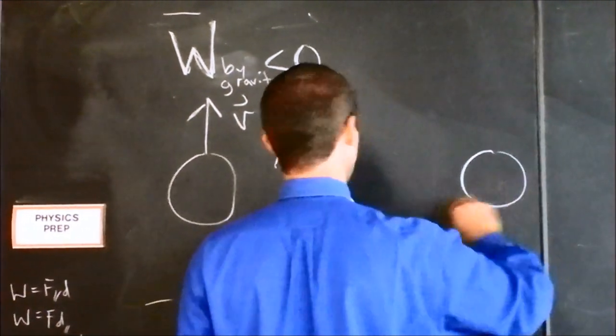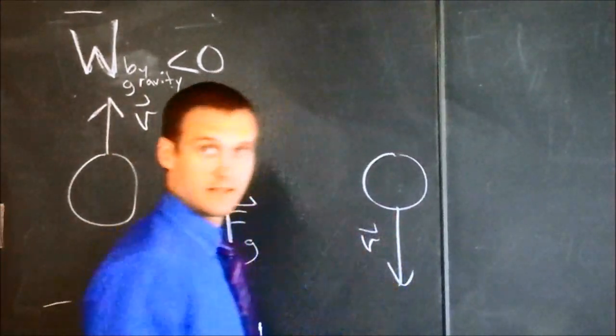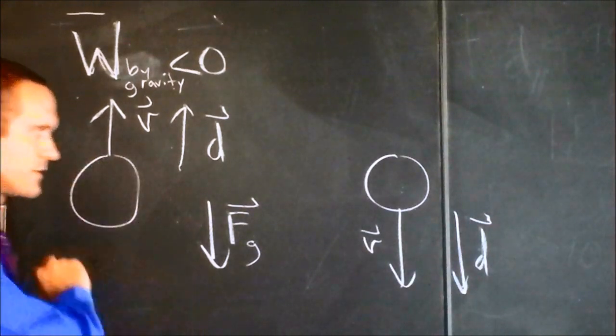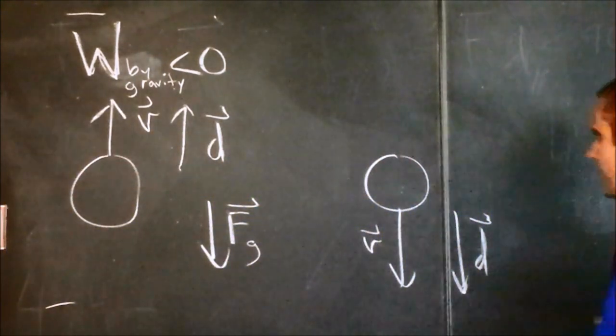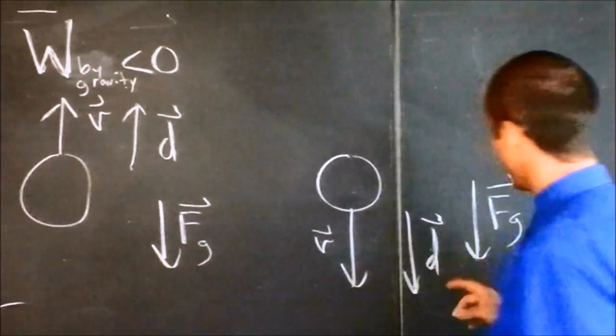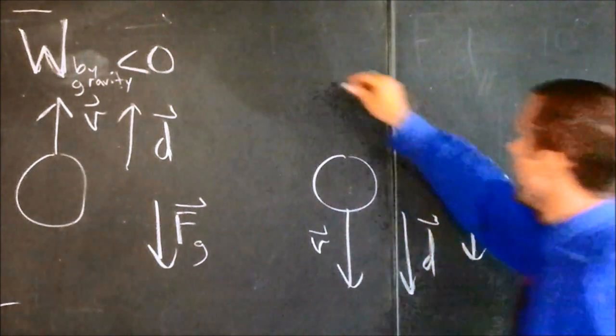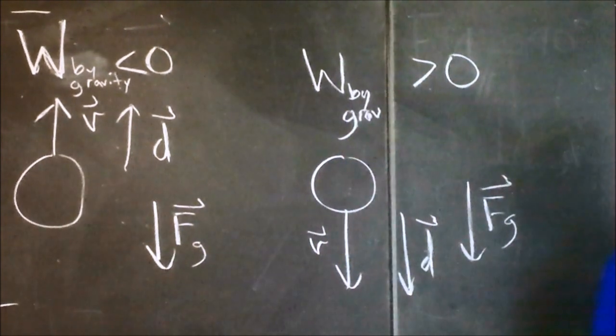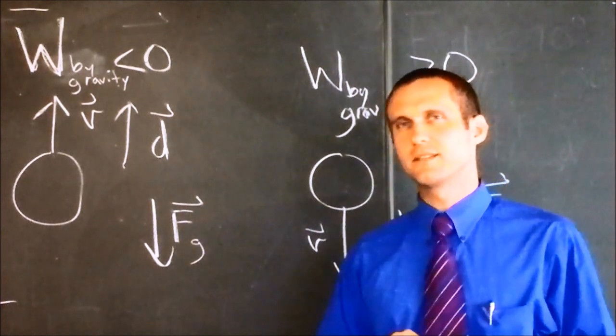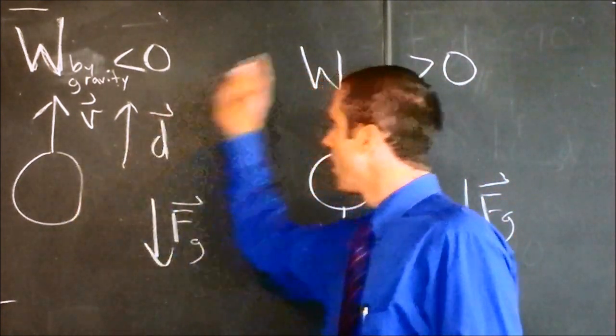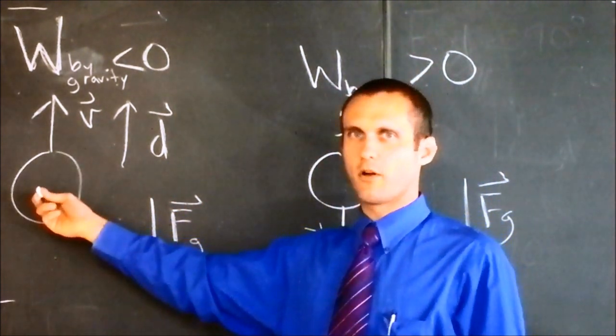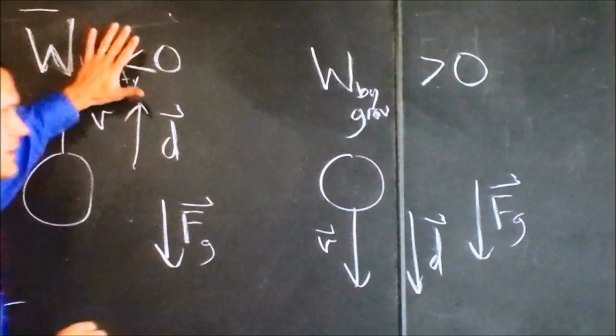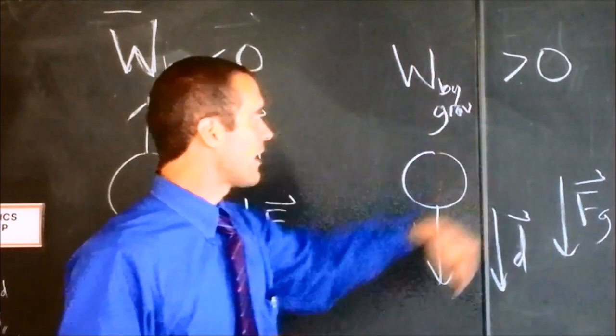As the bowling ball falls, we have exactly the opposite situation. We've got velocity that's downward, distance vector that points downward. And which way is the force on the bowling ball as it goes downward? It's also downward. So the force on the bowling ball is downward. And now these suckers are parallel, the force and the distance that they're going. So the work by gravity is greater than zero.